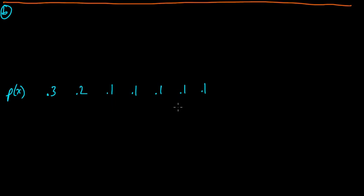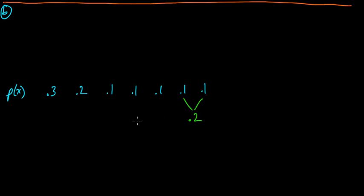If we take the smallest two, well there's no unique smallest two, so what do we do? We can just pick any two that are minimal — for which their sum is minimal. So let's take these two, for example. We add them and join them with a node, and we get 0.2. Now we need to sort and find two of the smallest again.